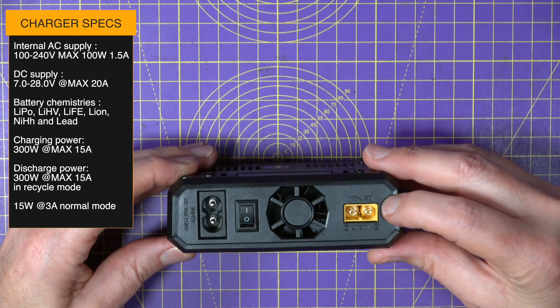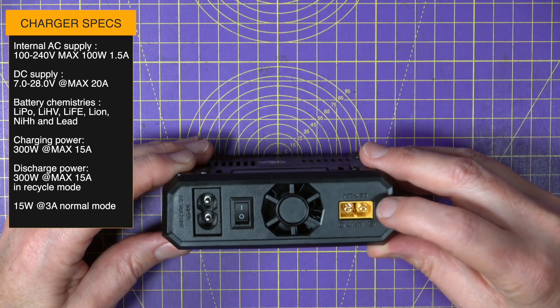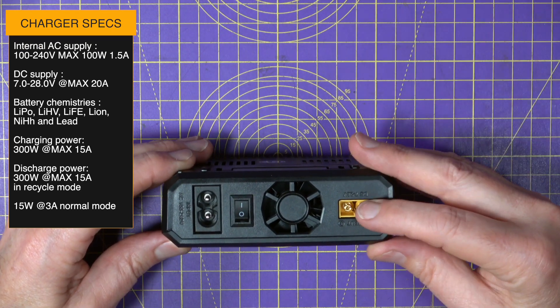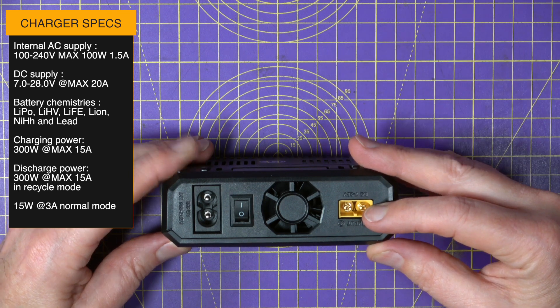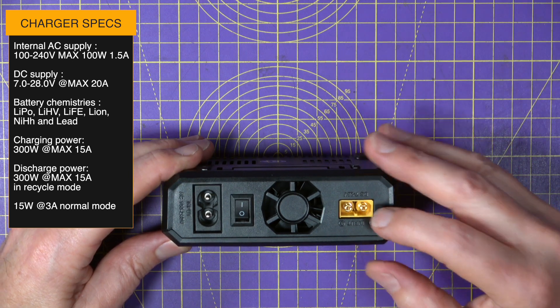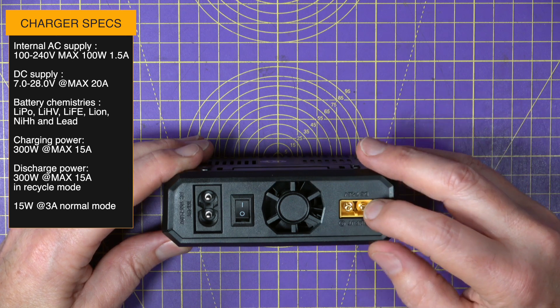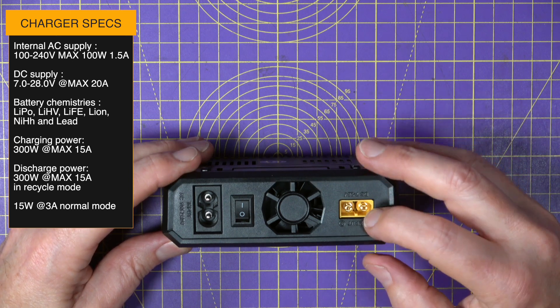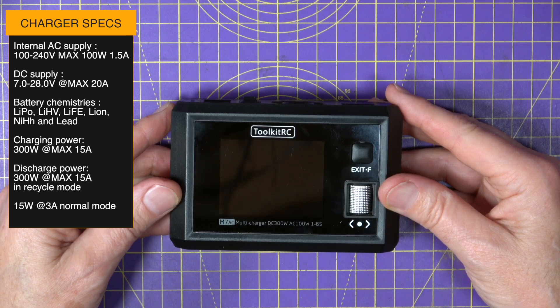Now, on the back there's an XT60 to connect a DC supply or another battery if you want. Anything between 7 and 28 volts at up to 20 amps is fine. And if you use this DC input with a suitable supply this charger can deliver up to 300 watts charge power.